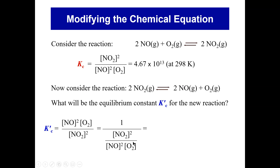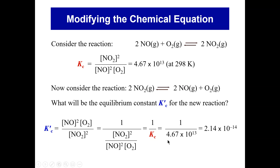We can express Kc prime as 1 over the original Kc expression. You'll notice that this is flipped over, and the denominator here is the same thing as the Kc expression for the first equation, which equals 4.67 times 10 to the 13. Therefore, Kc prime equals 1 over 4.67 times 10 to the 13, which works out to 2.14 times 10 to the minus 14. The Kc for the reaction written in one direction equals 1 over Kc of the reverse reaction.